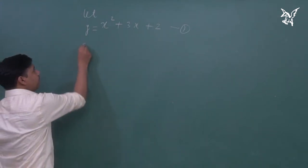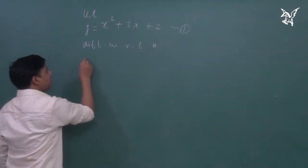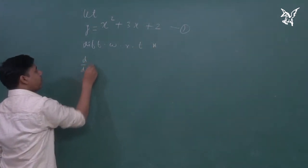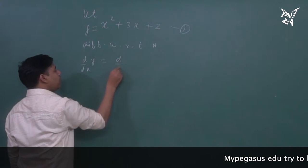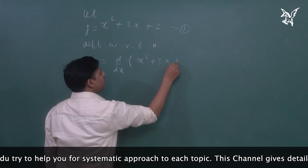So, differentiating with respect to x. What will happen? d by dx of y, that is equal to d by dx of whole in x squared plus 3x plus 2.